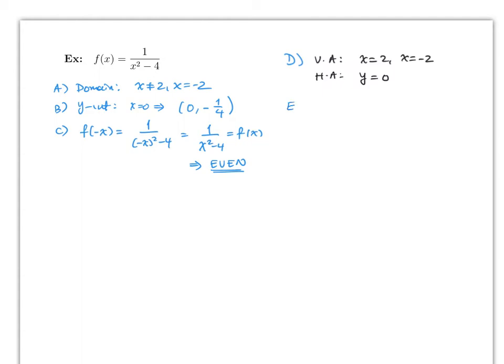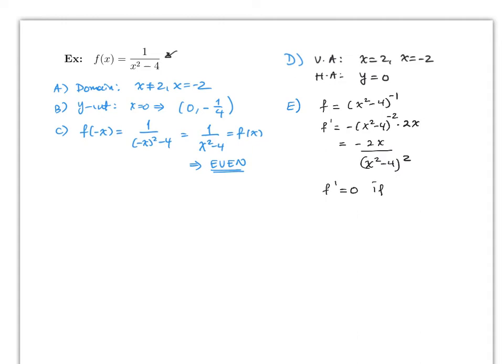For part E, we find the derivative. We can rewrite f as (x² − 4)⁻¹ and use the chain rule, giving f′ = −(x² − 4)⁻² × 2x, which simplifies to −2x/(x² − 4)². Setting f′ = 0 means x = 0, so the only critical point is x = 0.